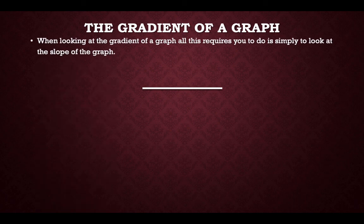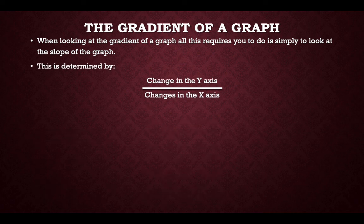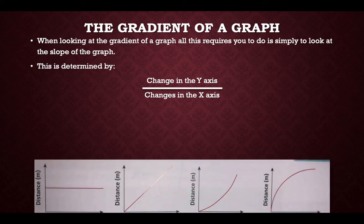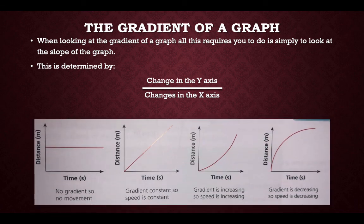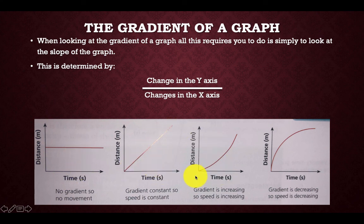The gradient of a graph: all that is required is to look at the slope, determined by the change in the y-axis divided by the change in the x-axis. No gradient means no movement; a constant gradient means constant speed; an increasing gradient means speed is increasing; and a decreasing gradient means speed is decreasing.